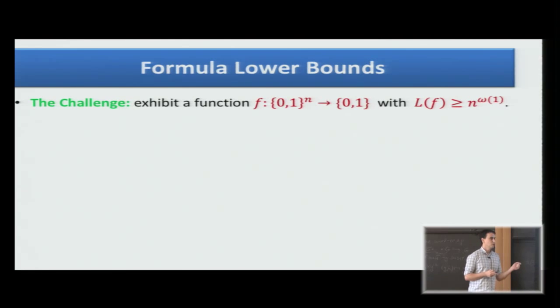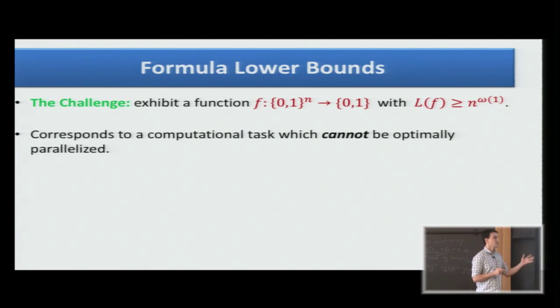What do we really want to do? We want to exhibit a function, an explicit function that we can compute, for example, in polynomial time. However, we cannot compute it using a formula of polynomial size. The formula size of this function is at least n to the omega 1, for example, n to the log n. Such a function will correspond to something that we cannot optimally parallelize.